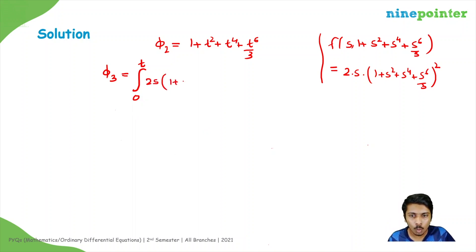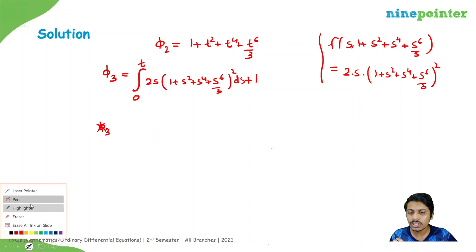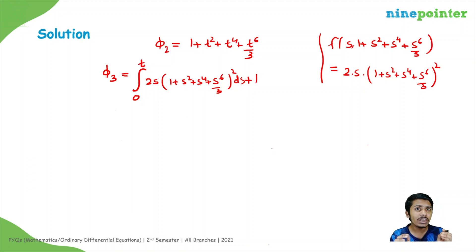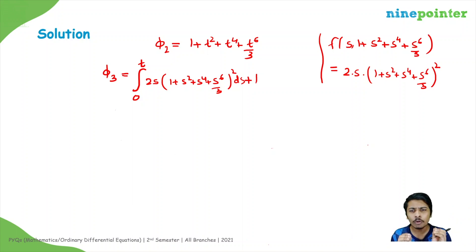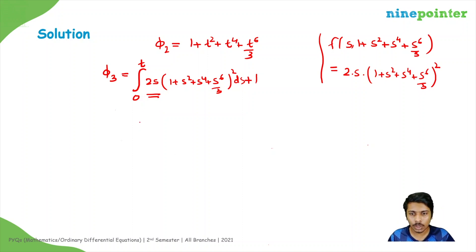Inside the integral we have 2s·(1 + s² + s⁴ + s⁶/3)² plus 1. To get the coefficient of x^10 after integration, we need the term with s⁹ inside the integrand. Since there is an s factor outside the bracket, we need the coefficient of s⁸ from the bracket (1 + s² + s⁴ + s⁶/3)². There is also a constant factor of 2 outside.